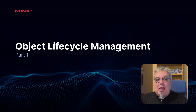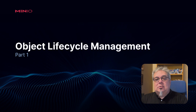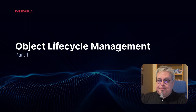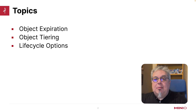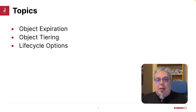In particular, if we have different levels of servers — some very fast servers, maybe some slower servers — we want to make sure that the most relevant data is on the fast servers, and our older stale data goes on to our slower servers. Let's take a look at the topics we're going to be covering today: object expiration as well as object tiering. These are the two forms of object lifecycle management that we have, and we'll also look at all the different options available. Let's dive right in.